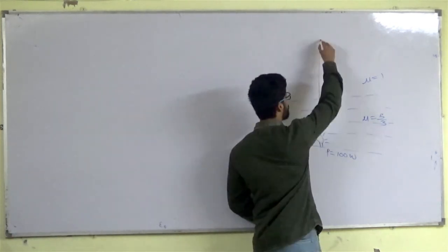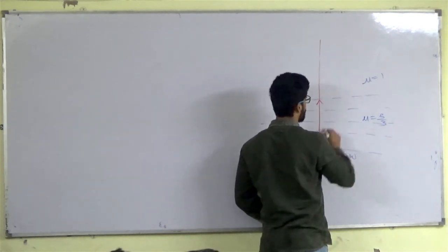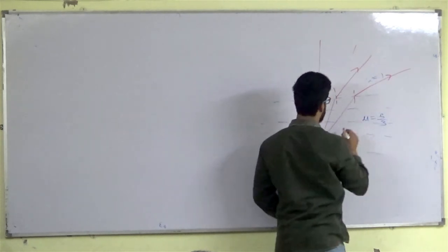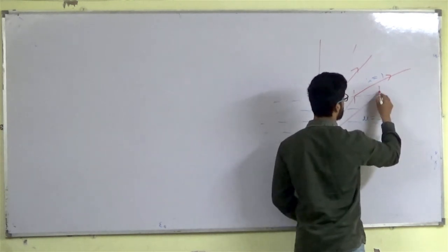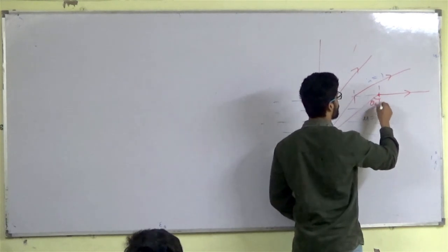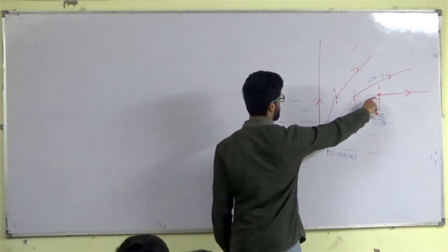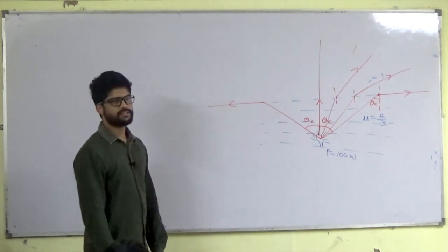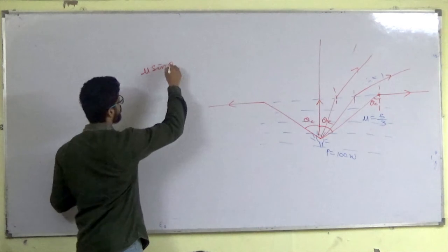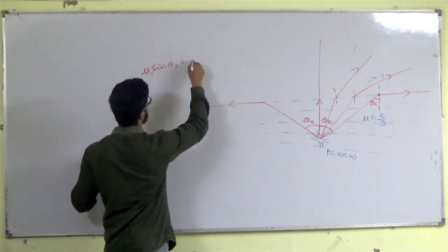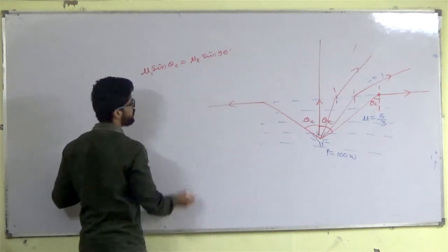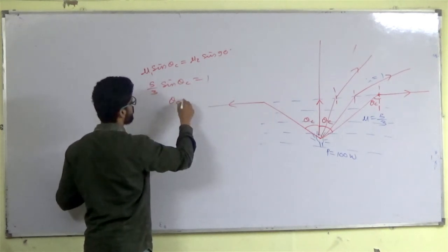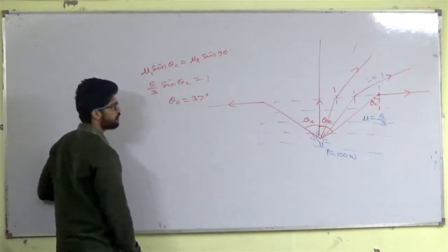Only the light within the critical angle cone will exit water. The light that makes an angle greater than theta_c undergoes TIR and stays in water. Using Snell's law at the critical angle: mu × sin(theta_c) = 1 × sin(90°), so (5/3) sin(theta_c) = 1, giving sin(theta_c) = 3/5. Therefore theta_c = 37°.